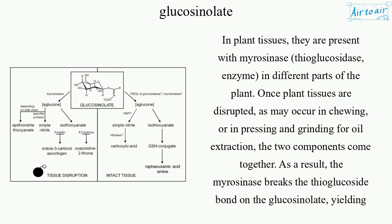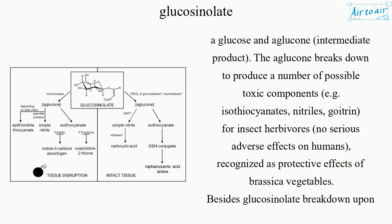As a result, the myrosinase breaks the thioglucoside bond on the glucosinolate, yielding a glucose and aglucone intermediate product.